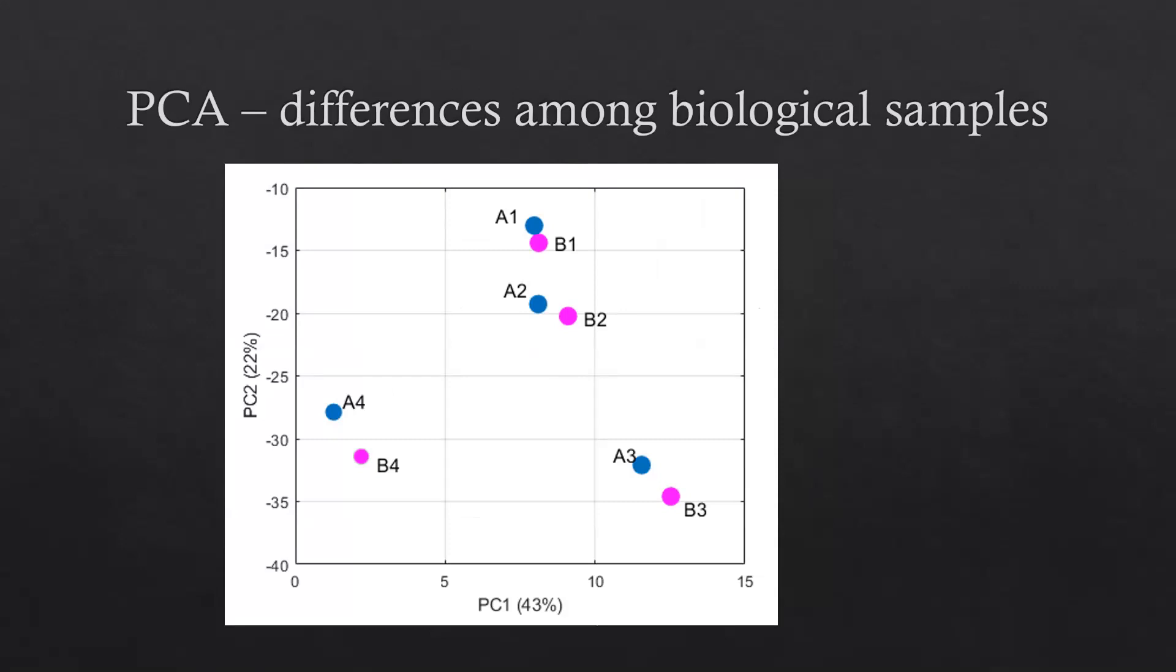However, we found those eight samples form four pairs, like A1-B1, A2-B2, A3-B3, A4-B4. Even though the variation among the same group is much larger than the difference between two groups,